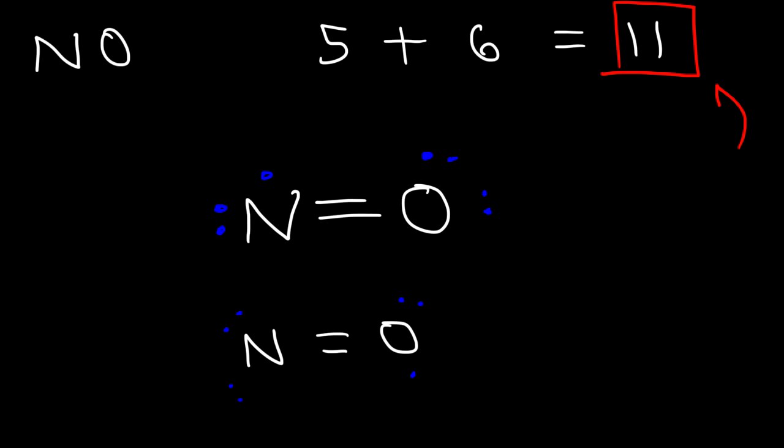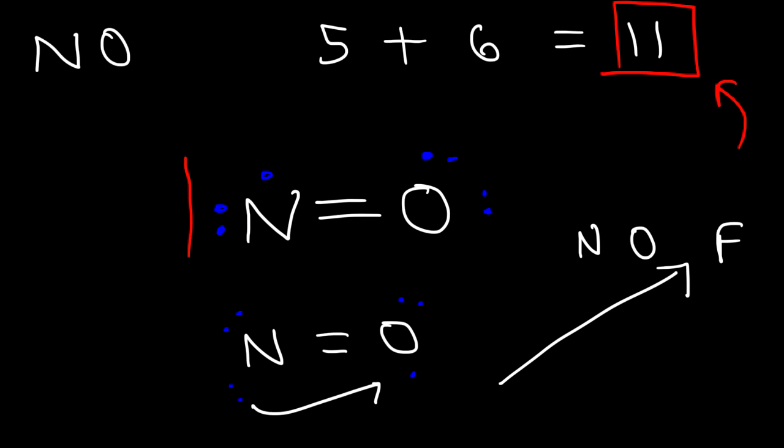The question is: which structure is the best representation? Oxygen is more electronegative than nitrogen — electronegativity increases going up and to the right toward fluorine, so oxygen is closer to fluorine on the periodic table. Because oxygen is more electronegative, it will take the extra electron, giving oxygen 8 electrons. That structure is the most stable Lewis structure for NO.